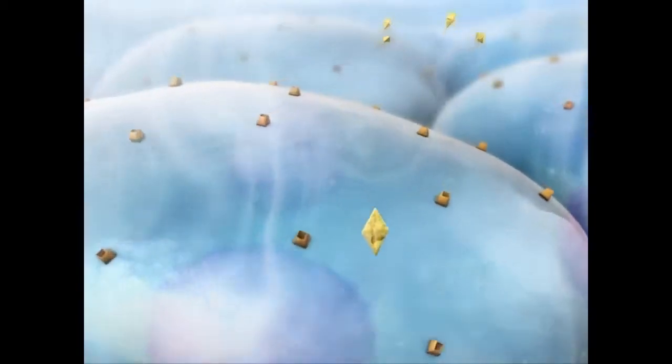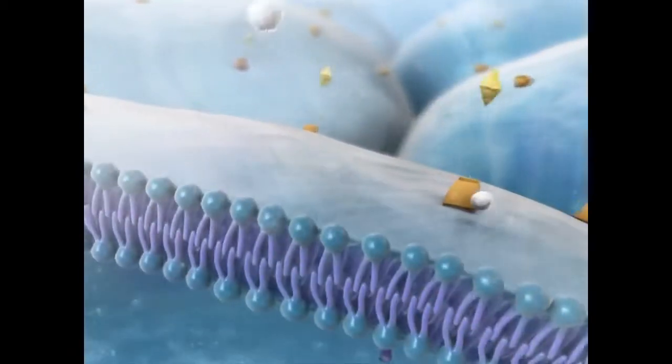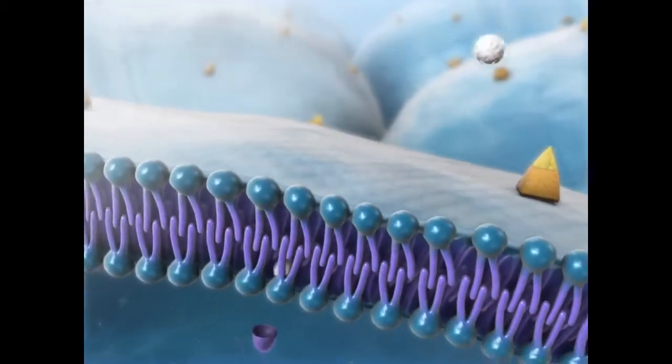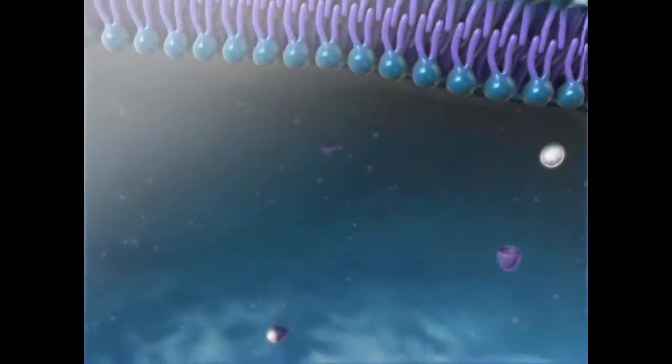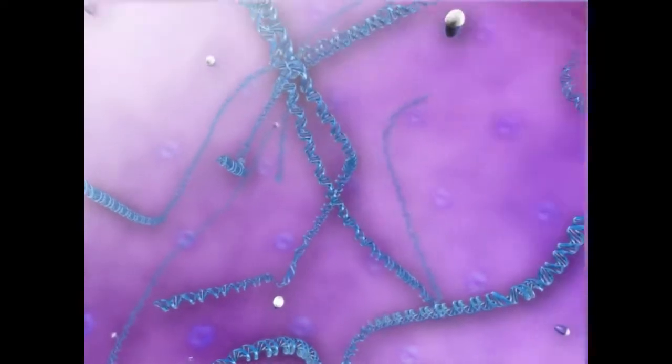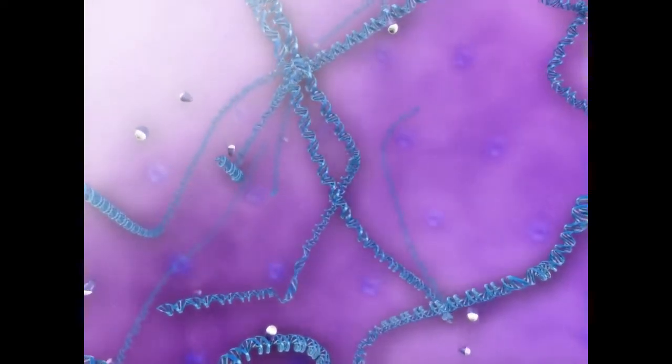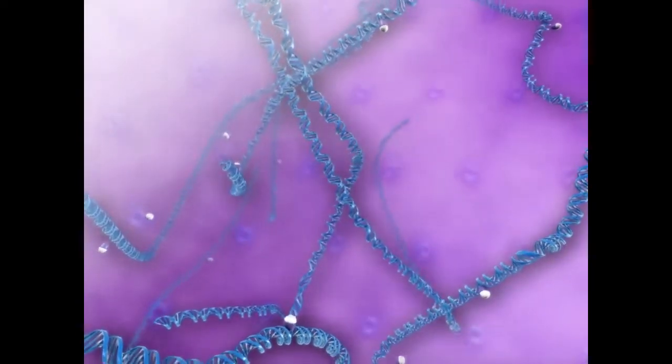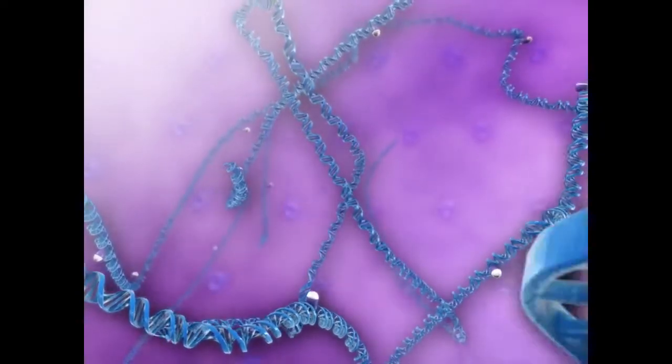Some hormones bind to receptors on the surface of the target cell. Other hormones pass through the cell membrane and attach to receptors in the cytoplasm or nucleus. The binding of hormones to receptors on a cell triggers a cascade of actions within the cell that alters its physiological behavior.